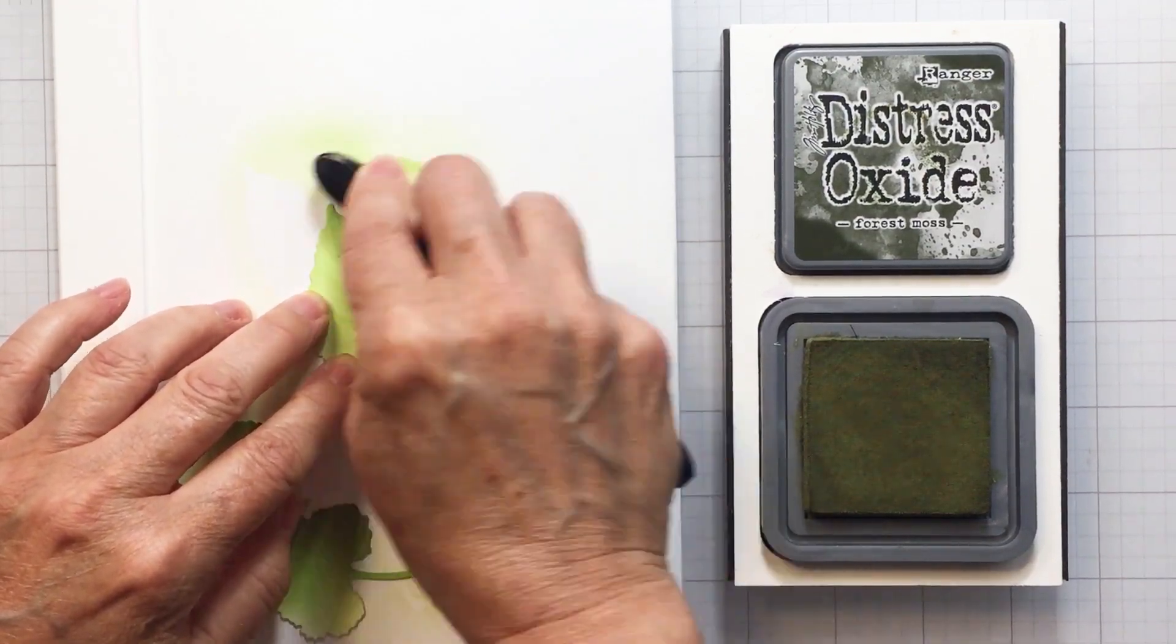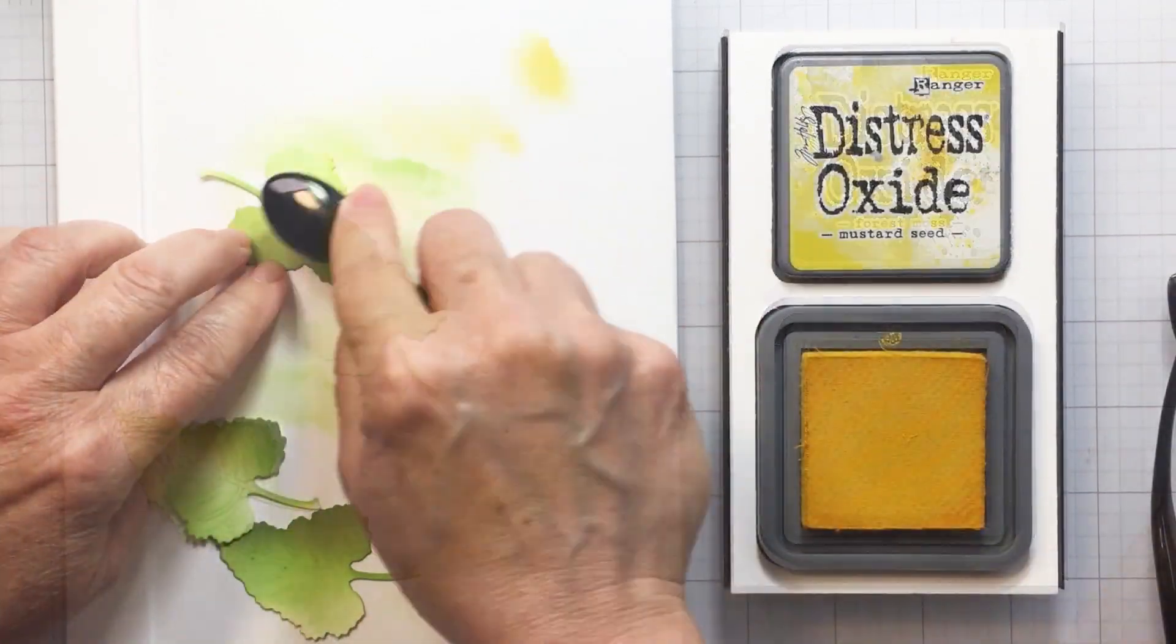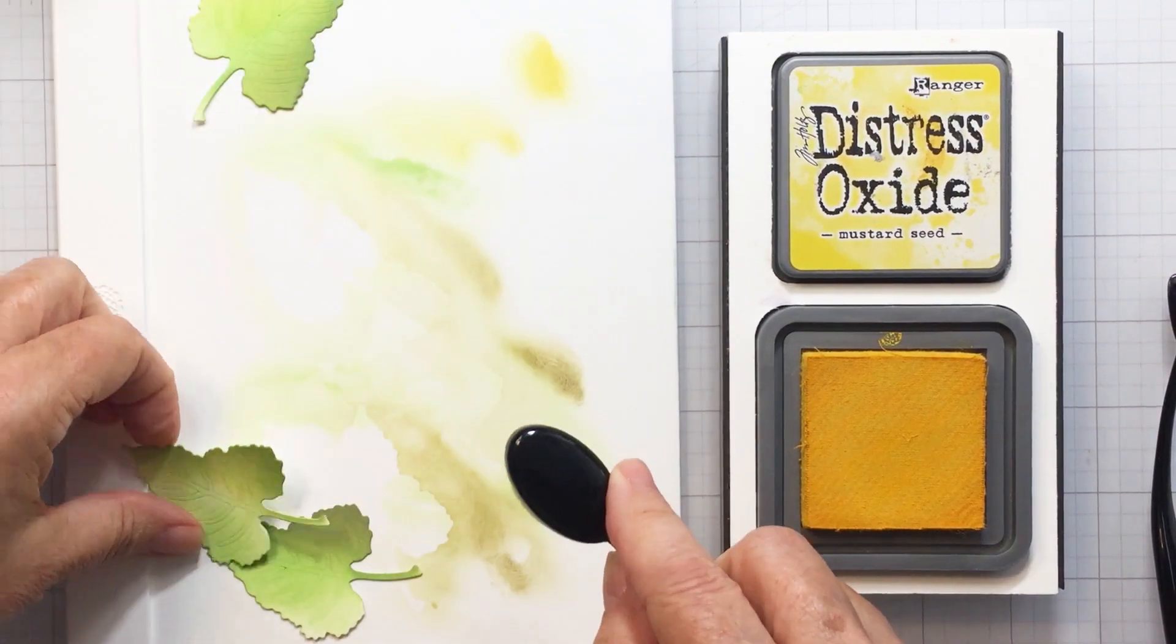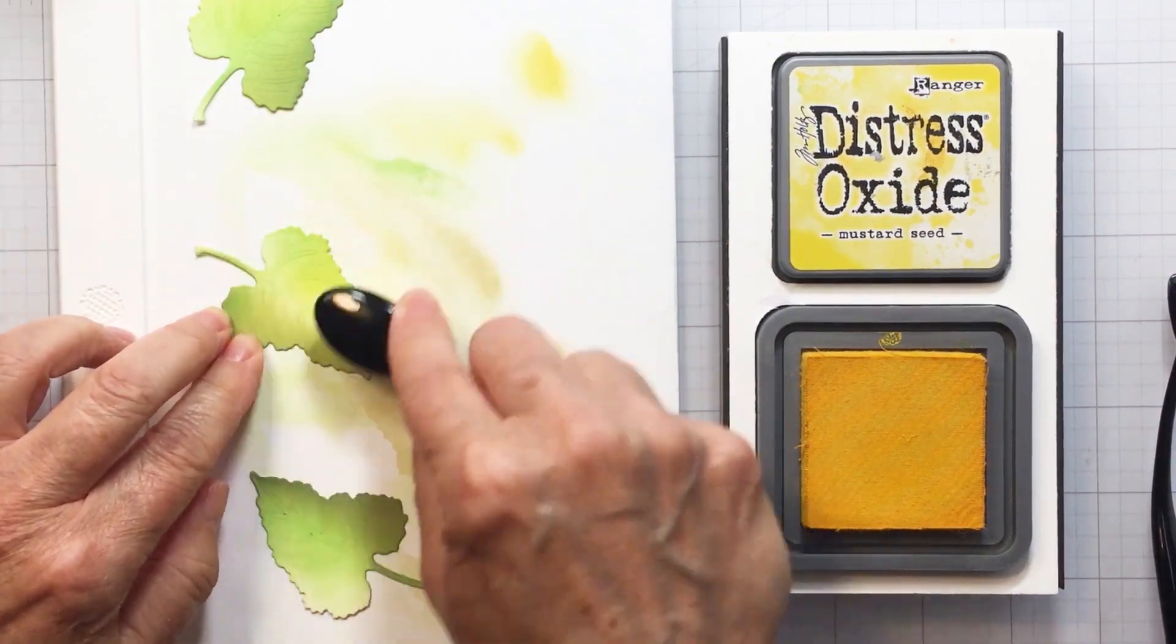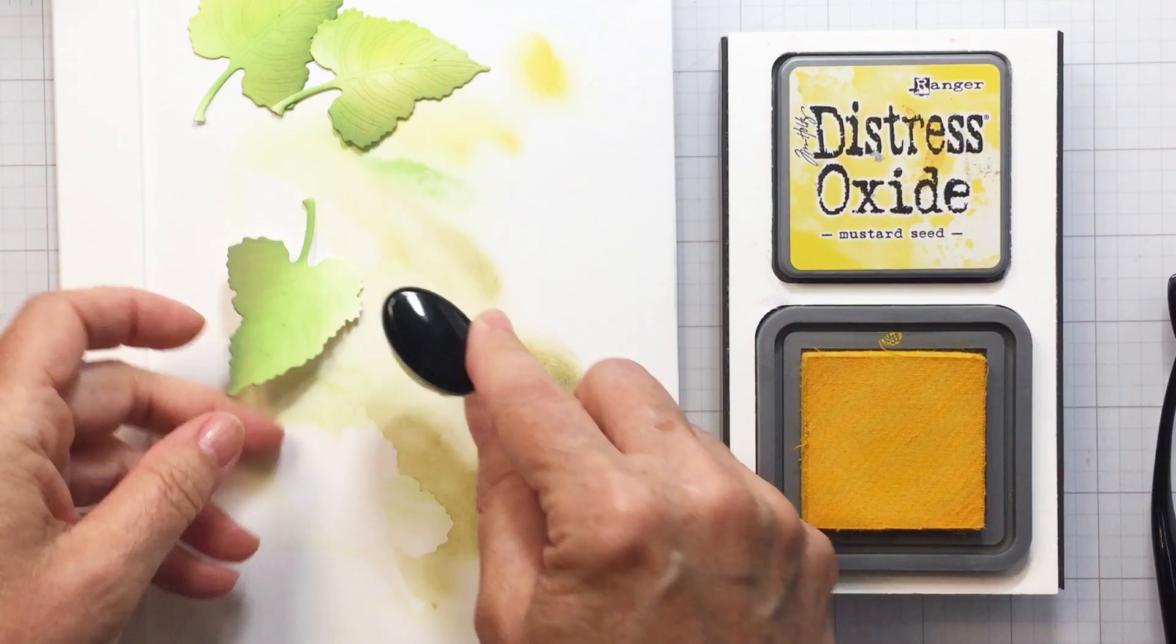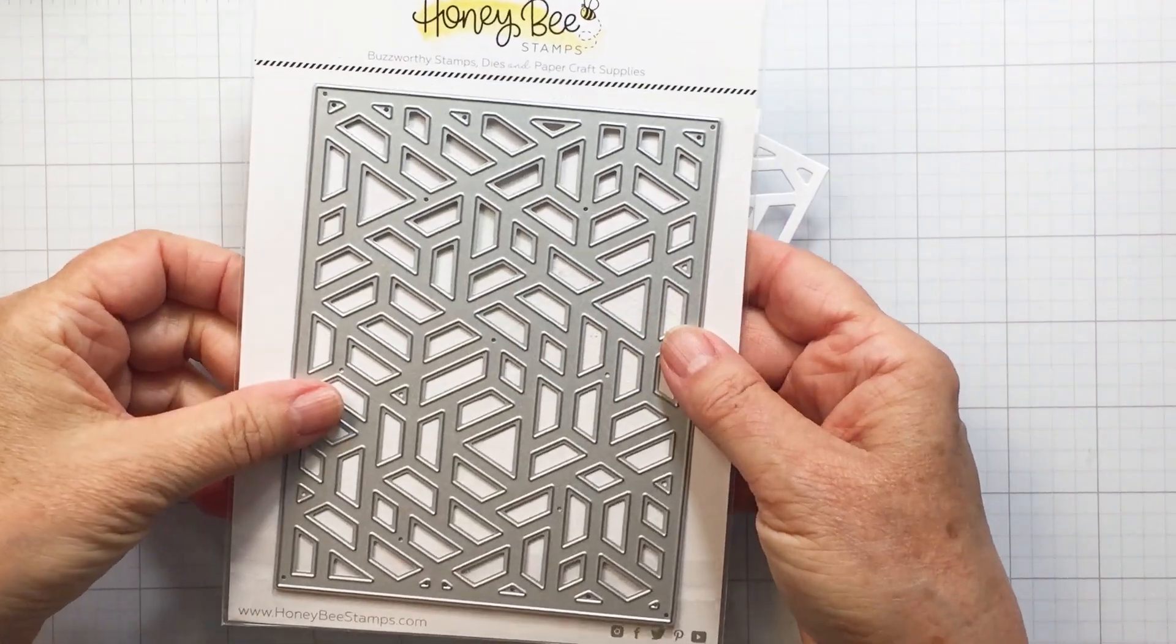These are so perfect for smaller areas where you want to just get into the little bits of your die cut. Now I'm just going to finish off with a little bit of mustard seed to add a little bit of yellow. You know, leaves are never just one color.